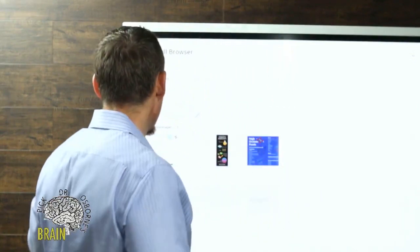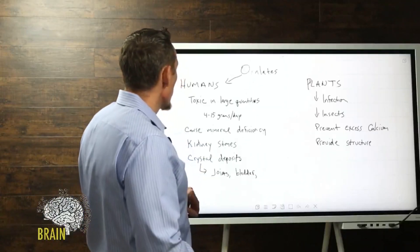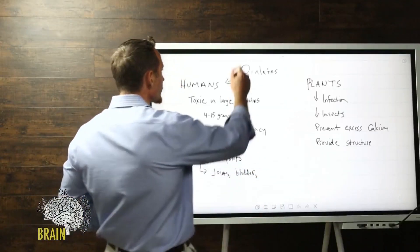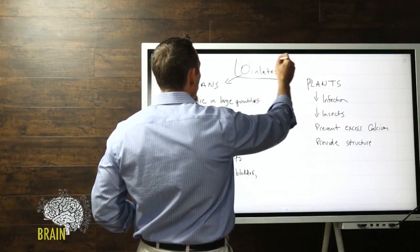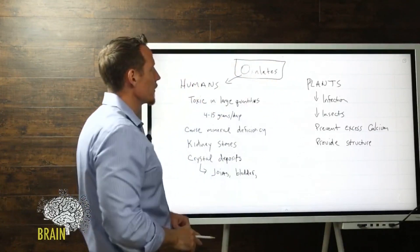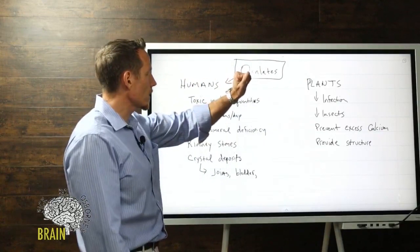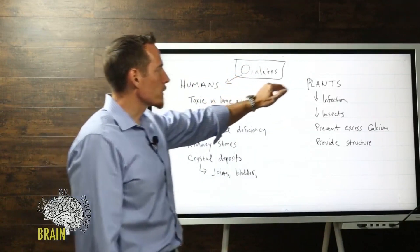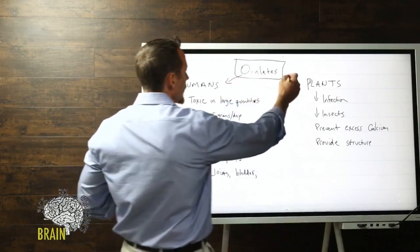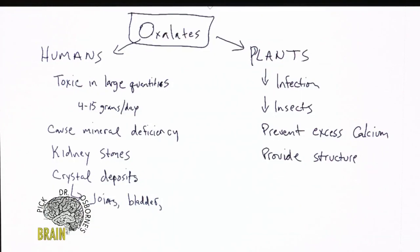Tonight we're going to be talking about oxalates. If you're not familiar with oxalates, let's do a dive. Oxalates are chemical compounds predominantly found in plants. They're part of the plant's defense mechanism system. Plants use oxalates to lower their risk of potential infection, lower the risk of insects taking over and creating problems, to prevent excessive calcium buildup, as well as to provide structural elements.